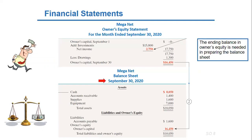It's for a specific date, unlike the owner's equity statement and the income statement. It's based on the basic accounting equation: assets equal liabilities plus owner's equity, and this is why we're having the balance here.